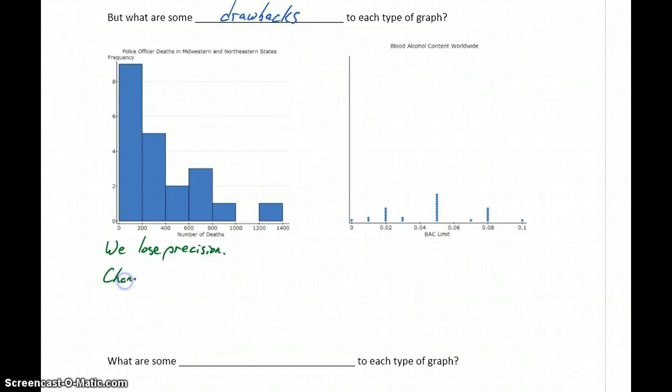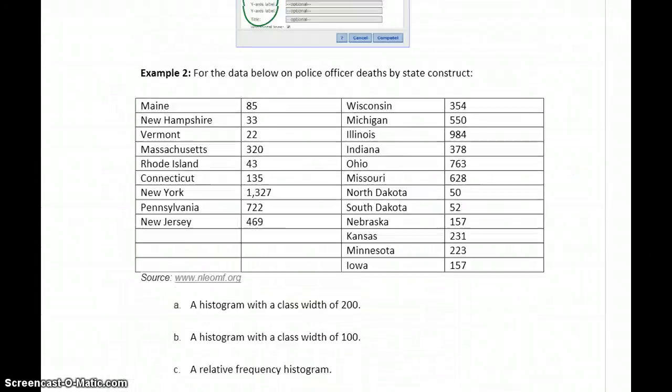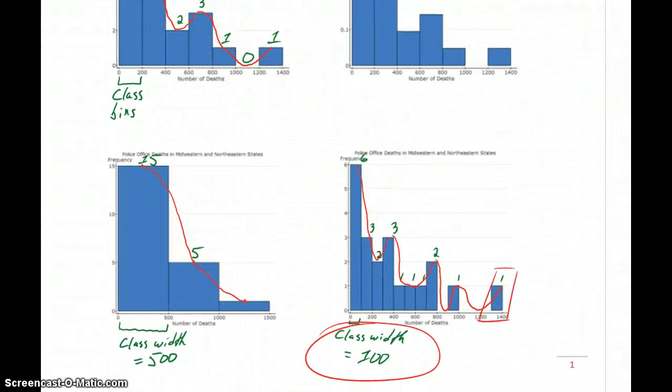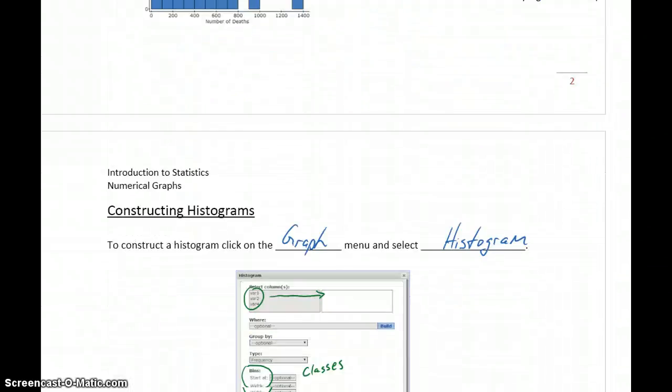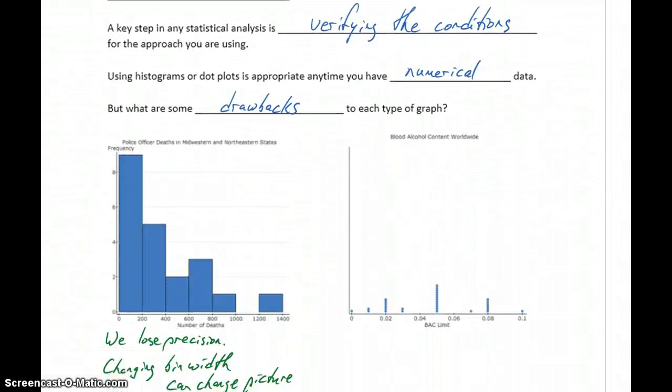We've also seen that changing bins or changing your bin width can change the picture. For instance, here we have one class that's empty and then we have a potential outlier. If we scroll back to that first page, we have the two different graphs with different bin widths. With one of the bin widths we actually have no breaks in the graph, so it becomes very difficult to tell if there are any outliers. This graph would lead someone to believe that there aren't because we have continuous classes for all those values, but then with a different bin width we see a larger gap. So changing the class width has the potential to change what we see or what we communicate.